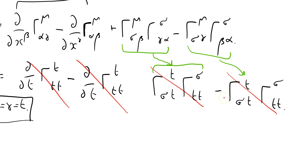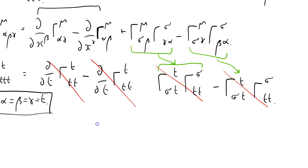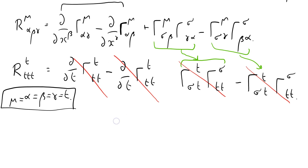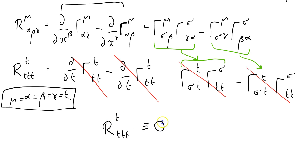And so these terms separately cancel. So what have we learnt from this process? We have learnt that the Riemann-Christoffel tensor R_TTTT is identically equal to zero for the test metric that we are considering.